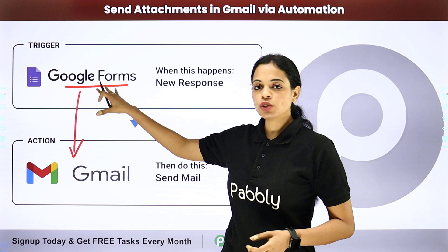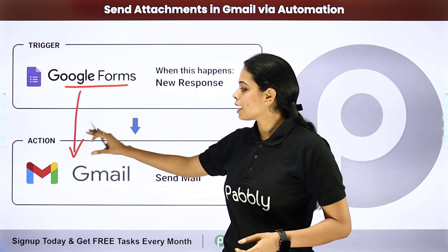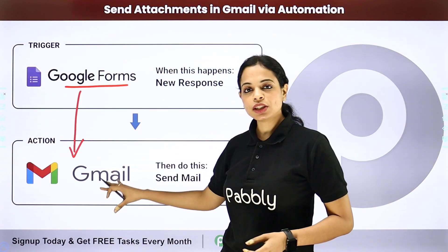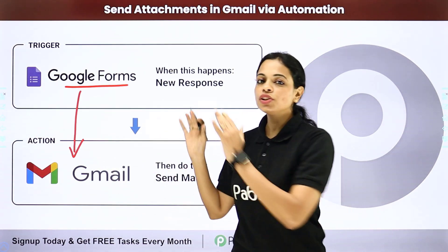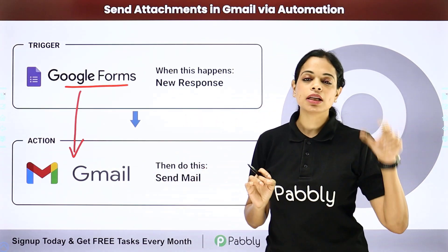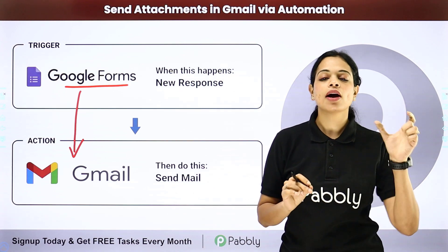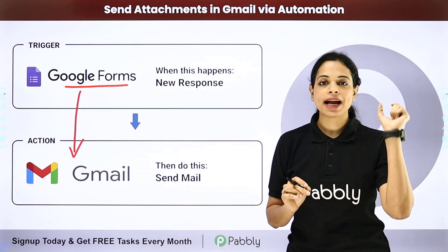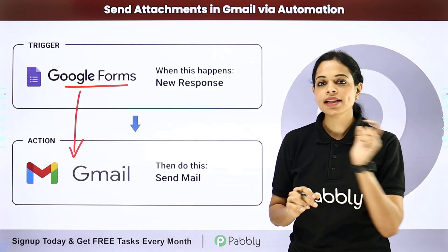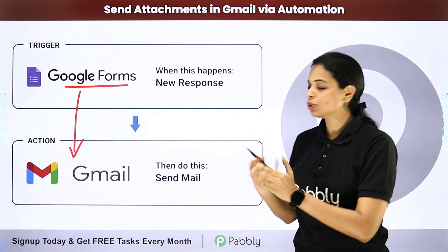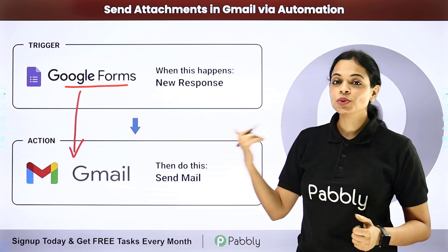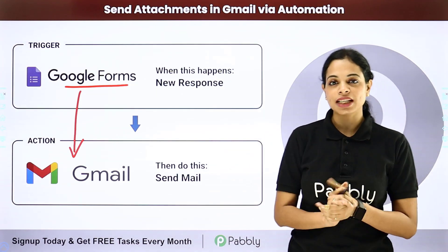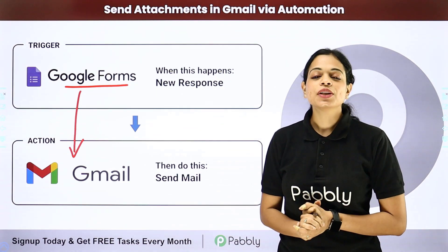So your trigger application would be Google Forms and your action application would be Gmail. Here you just have to write the name of the file, also add the URL, and you would be able to send the mail. Now how can you do this yourself — integrate and automate this entire process?